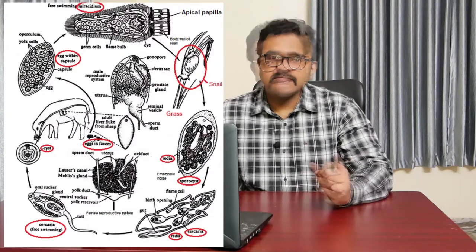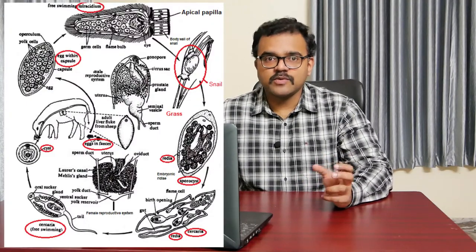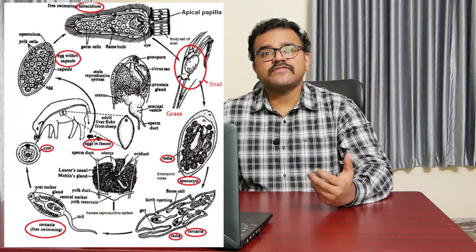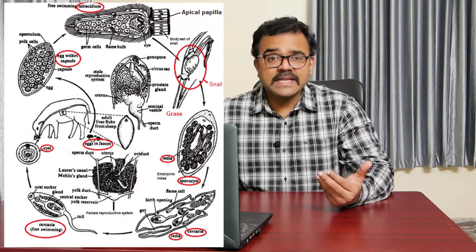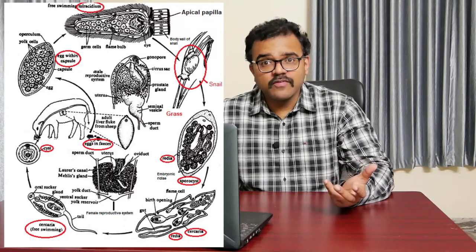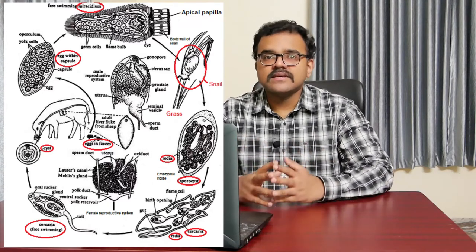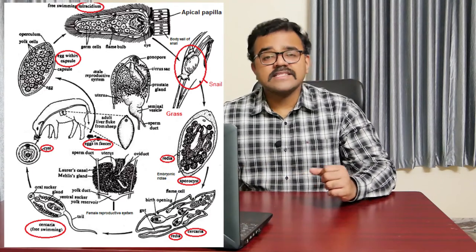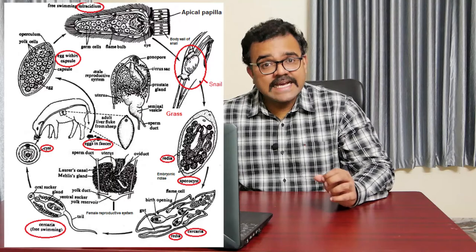The fertilized eggs leave the vertebrate host through feces and urine. Each egg hatches out as a free-swimming ciliated larva called a miracidium. The larva penetrates the body wall of an aquatic snail that comes in contact with it. Once inside the snail, the miracidium metamorphoses into a sac-like sporocyst without any gut.